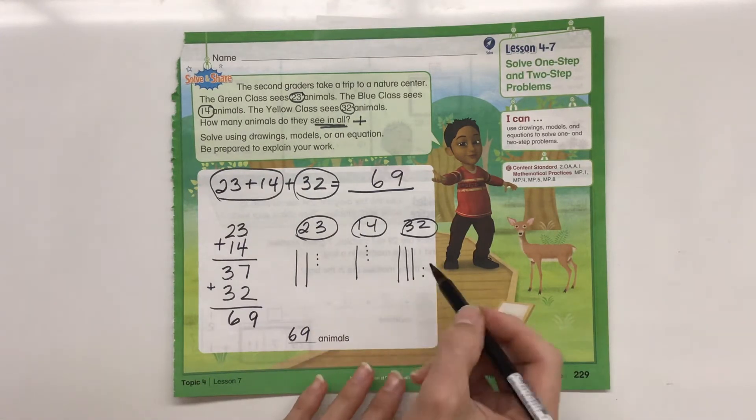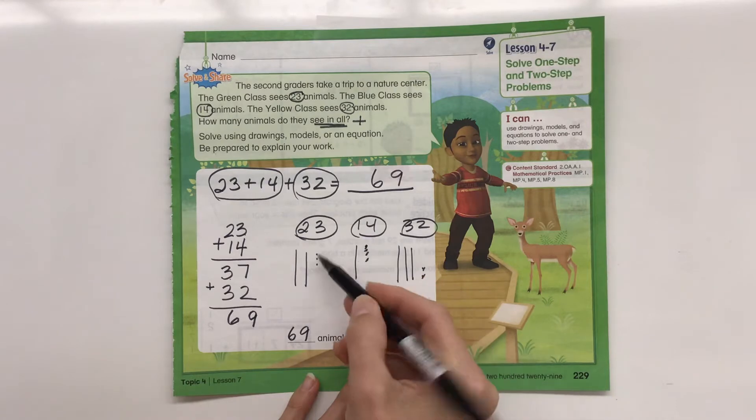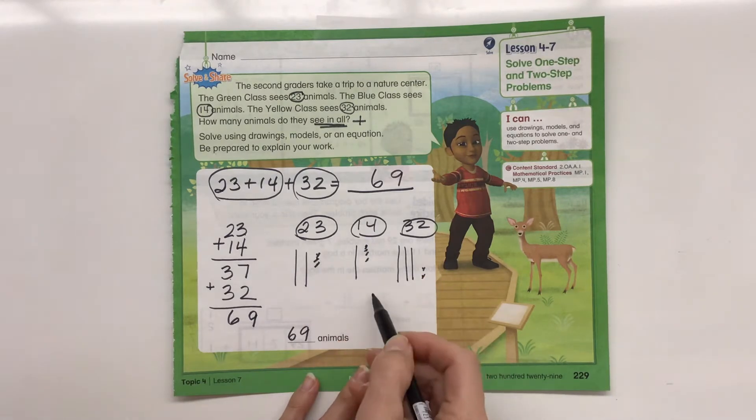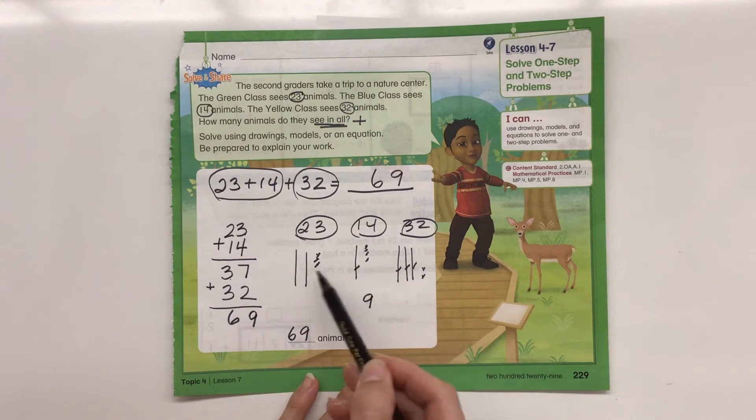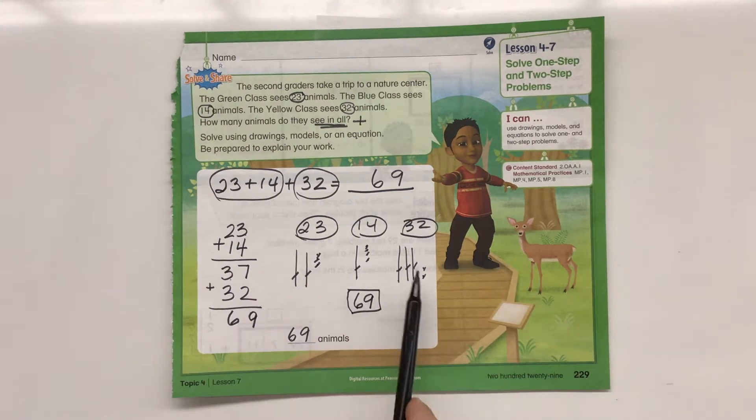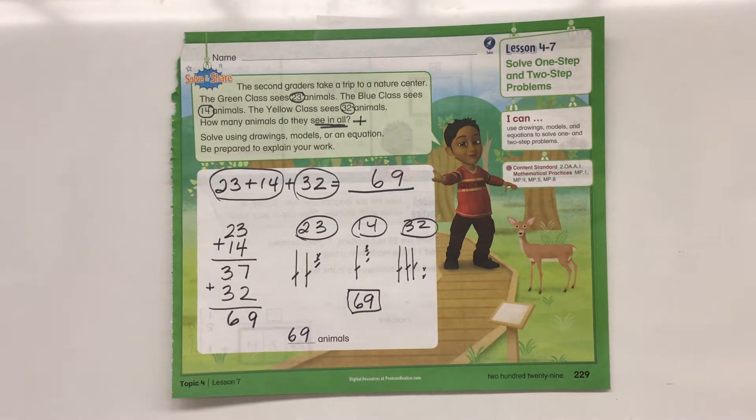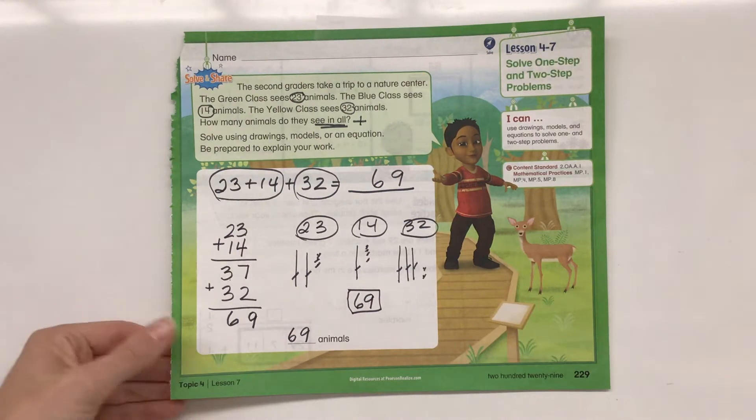First we have to bundle the groups of ones: 1, 2, 3, 4, 5, 6, 7, 8, 9. So we couldn't even make a bundle, so we just have nine ones. How many groups of 10 do we have? 1, 2, 3, 4, 5, 6 groups of 10. So we can do it that way also. The tricky part with drawing pictures is it can take a really long time to count all of the ones and bundle them into groups of 10. But again, it's another strategy that you can use.